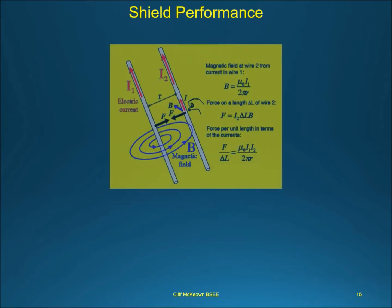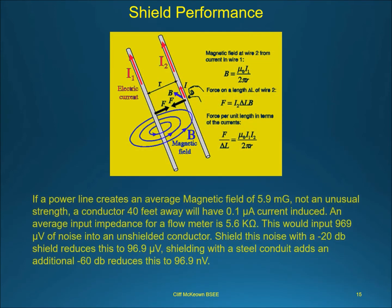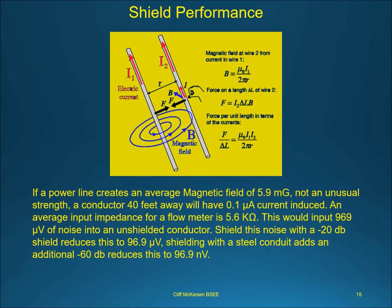The braided shields on our cables offer about minus 20 dB attenuation for EMI, or about 10 to 1. Routing this cable through a steel conduit adds an additional minus 60 dB of attenuation, or roughly a 10,000 to 1 reduction of EMI. If a power line creates an average magnetic field of 5.9 mG — not an unusual strength — a conductor 40 feet away will have 0.1 microamps of current induced. An average input impedance for a flow meter is 5.6 kΩ. This would input 969 microvolts of noise into an unshielded conductor. Shielding with a minus 20 dB shield reduces this to 96.9 microvolts, and adding a steel conduit at an additional minus 60 dB reduces this to 96.9 nanovolts.